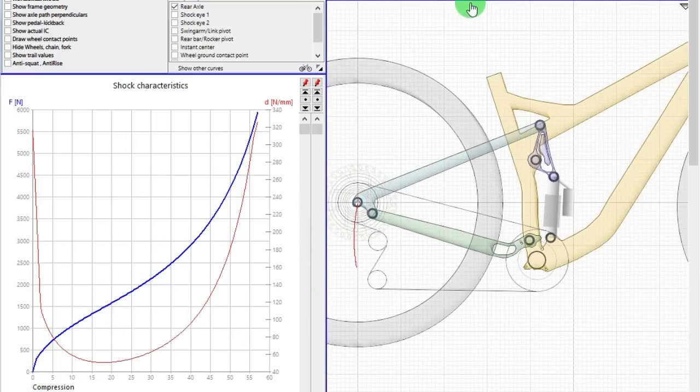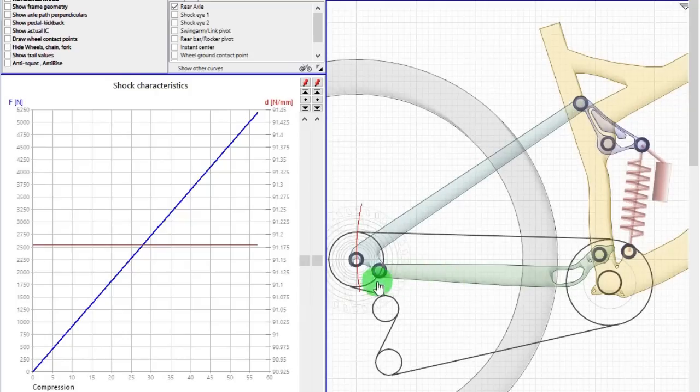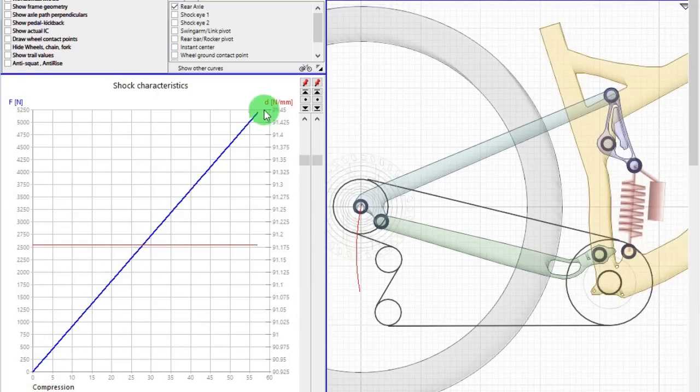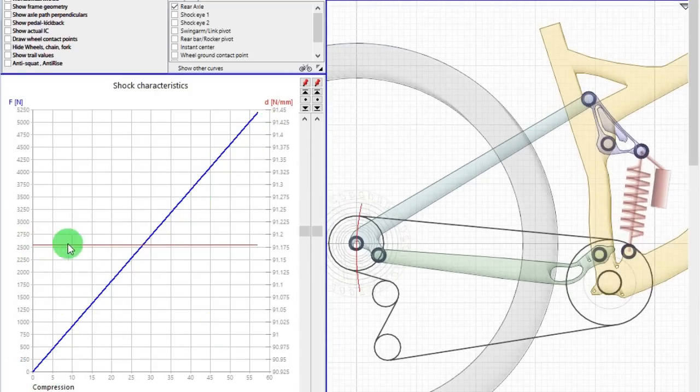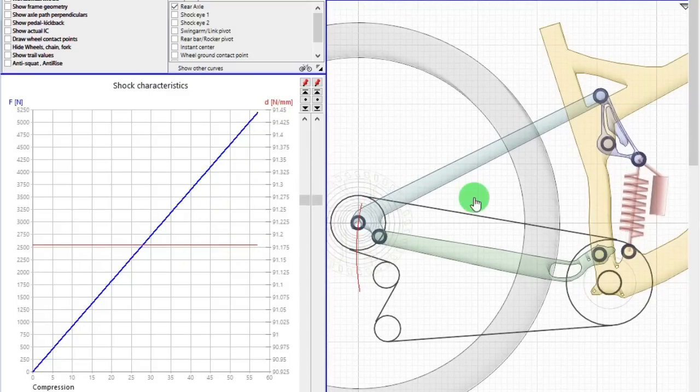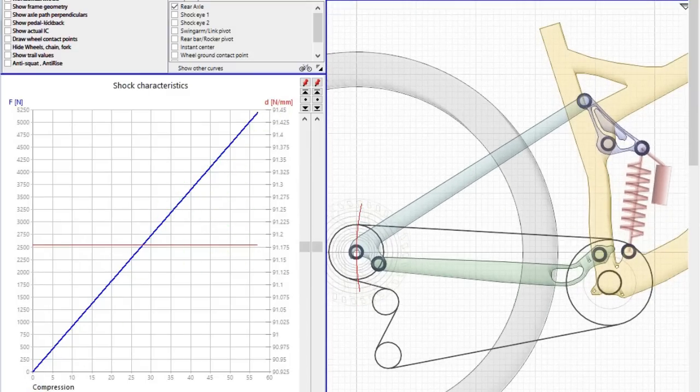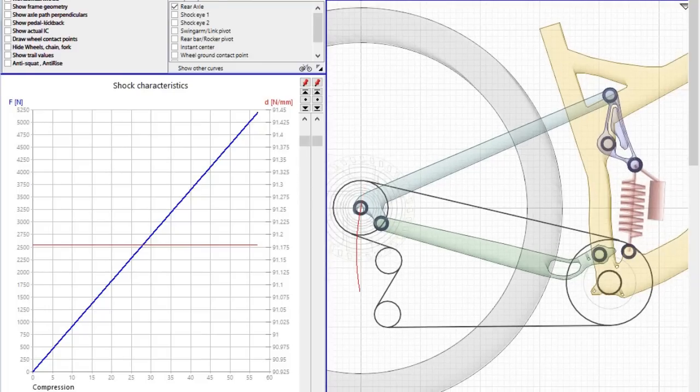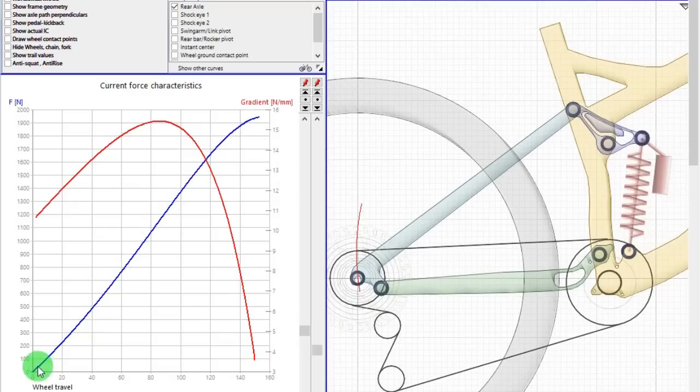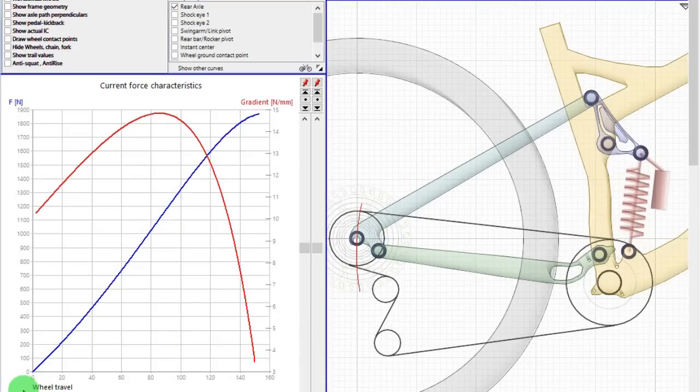I prefer to use a spring shock to do comparisons between bikes because coil shocks are completely linear. So there is no progressivity, so they act as a neutral shock, so it's much easier to compare the forces needed to compress the rear wheel.